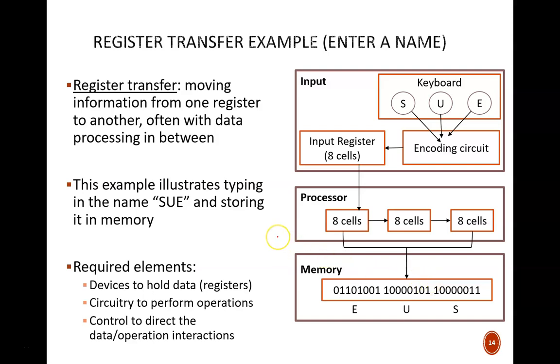A simple example, but you can see how many components were involved. We need registers to hold the data, circuitry to perform operations, like encoding the keystrokes or shifting the data, and some sort of a control that sends instructions to each of the components at the right time. That's where we're headed in this course. We will learn how to interpret binary information, how to build circuits that perform specific operations, how to build circuits that store data, and how to control all of the data flow. It's fun. It's detailed. It's how computers work.